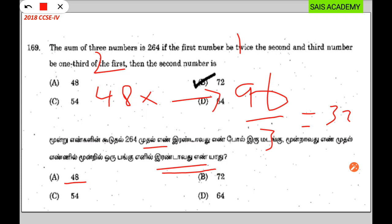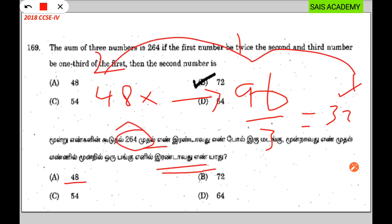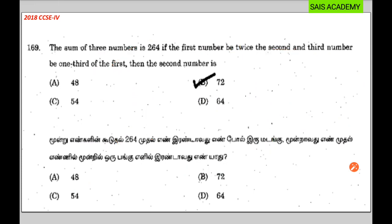1st number equal to 3rds, 2nd number equal to 4th, 3rd number equal to 3rds. 140-2, 1, 1, 2, 2. You can see the same thing as a second — if you have a rough calculation, you can put it in. I can see the same thing as 20 by 12.